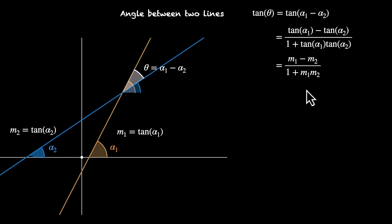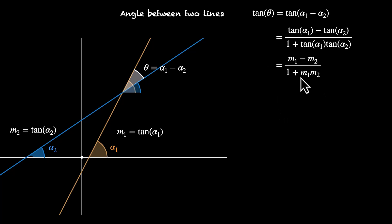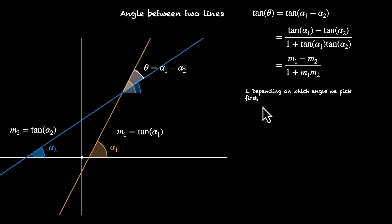Now a couple of observations. Which one's M1 and which one's M2? Depending on which line you pick first — if you're only looking at two equations of two lines without plotting those lines — depending on which slope you pick first, you'll get a different answer. If you switch the order of these slopes and pick the second line first, you'll get M2 minus M1, which is the exact opposite. So either you'll get a positive value or the same thing with a negative sign, for example 10 or minus 10. Depending on which angle we pick first, the value could be positive or negative.